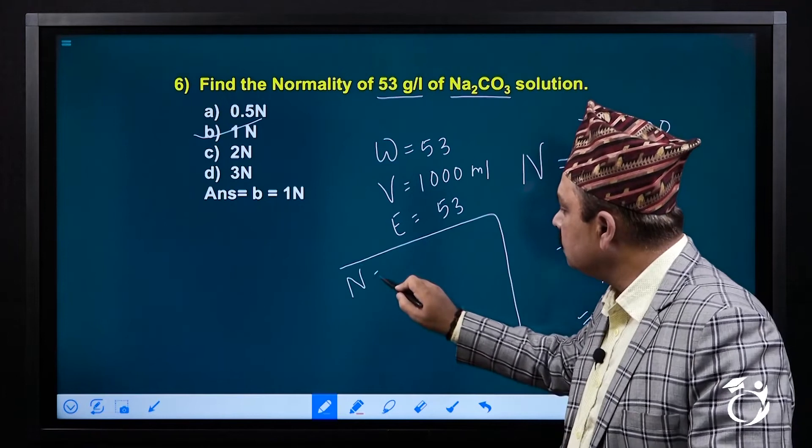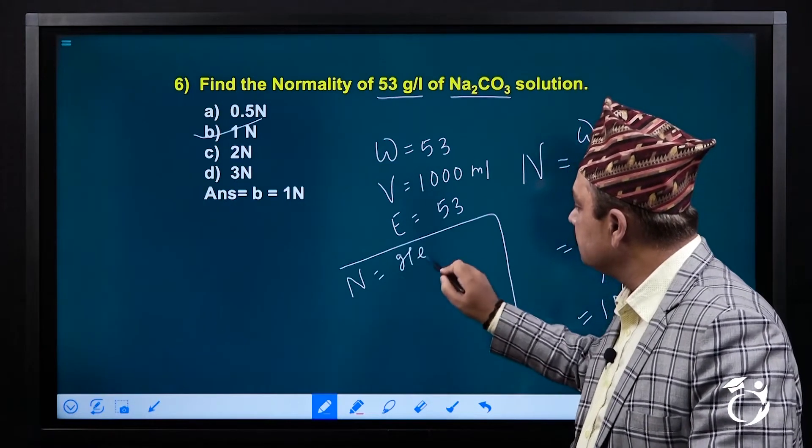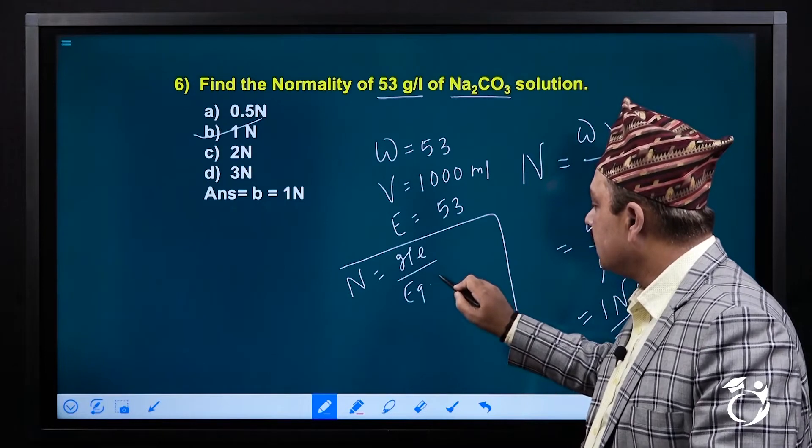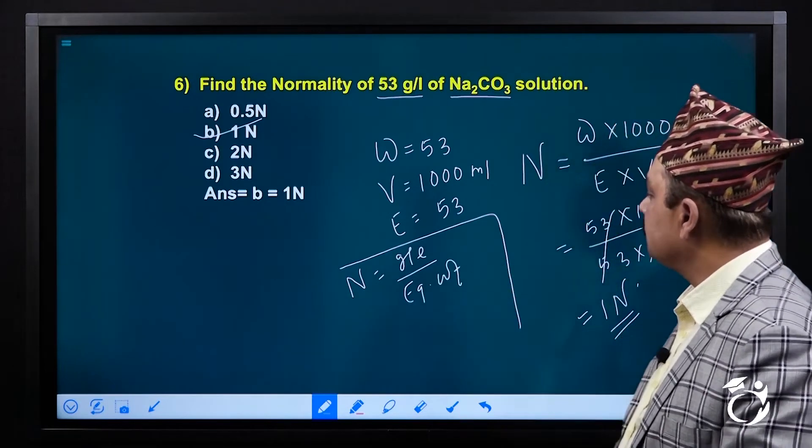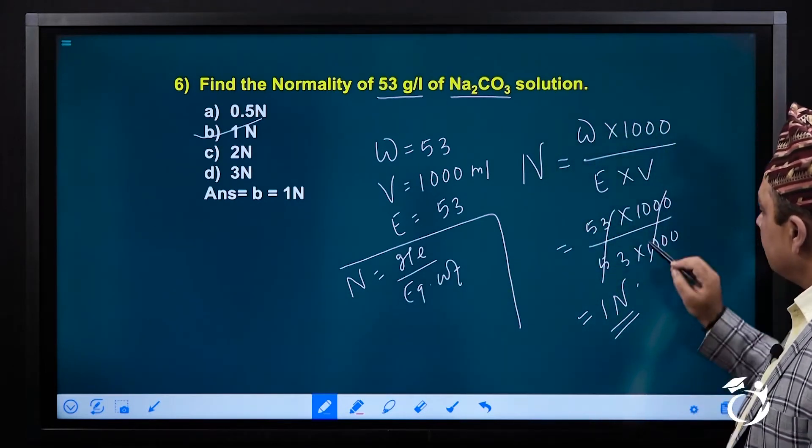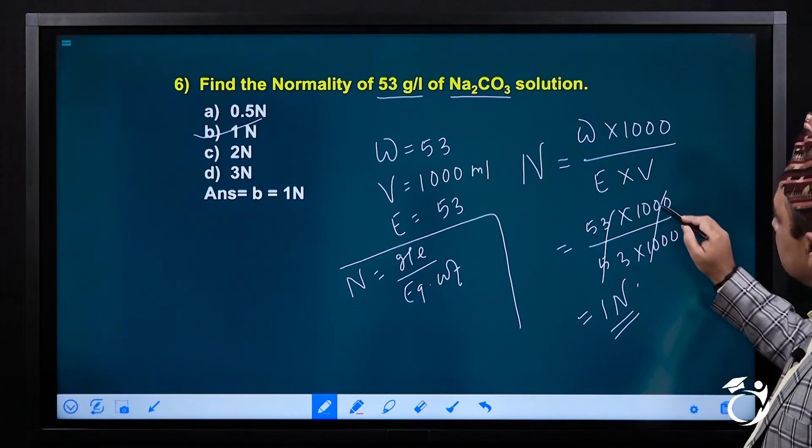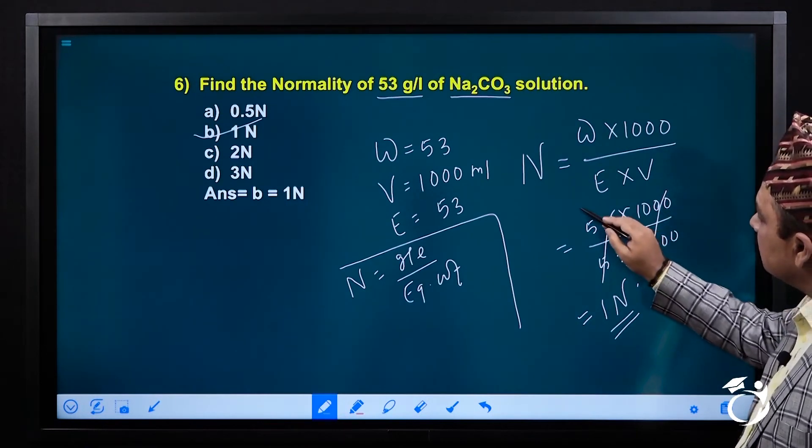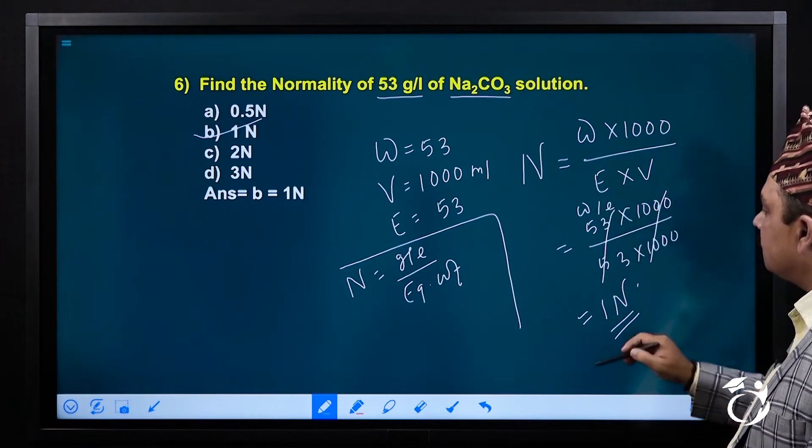So normality equals 1N. 1N equals gram per liter upon equivalent weight. So here we will have 1000 and 1000 cancel, so this gives the weight of gram per liter.